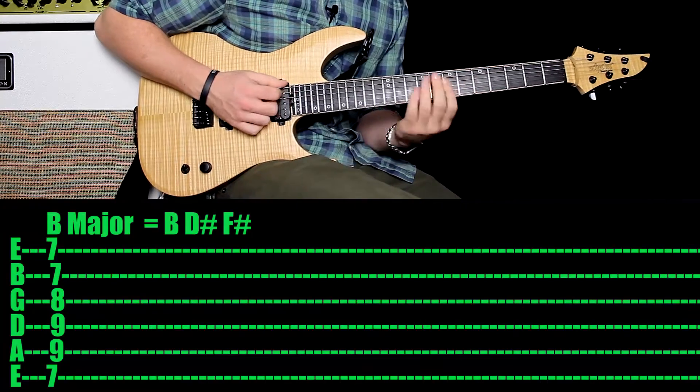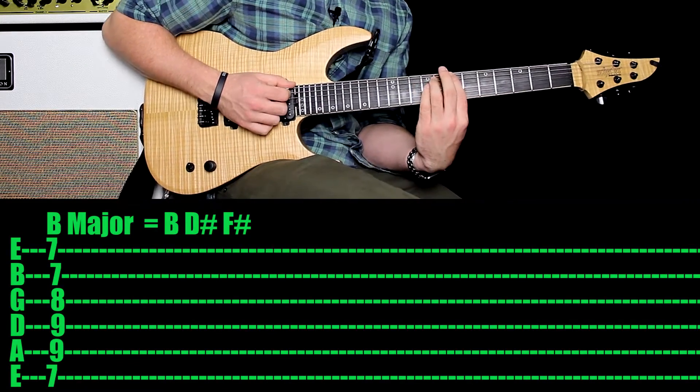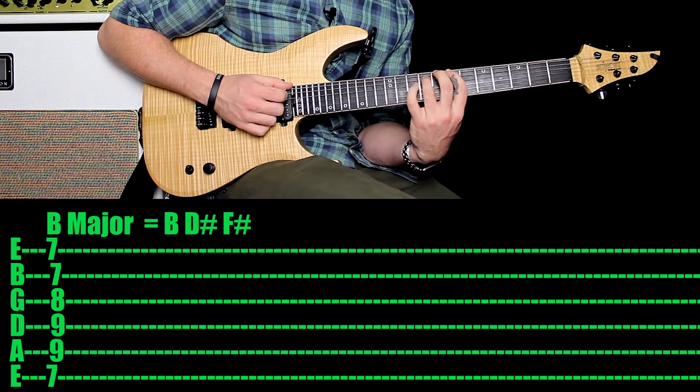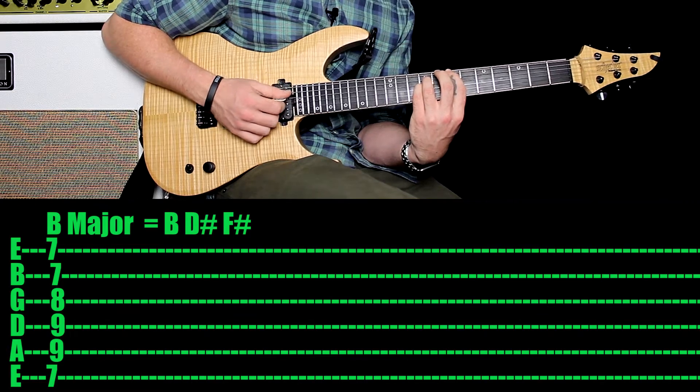Come in with your first finger all the way up there on the seventh fret of the sixth string. Then you want to make a power chord with your third finger, so that's there on the F sharp. Then you want your pinky underneath that, that's another B note.